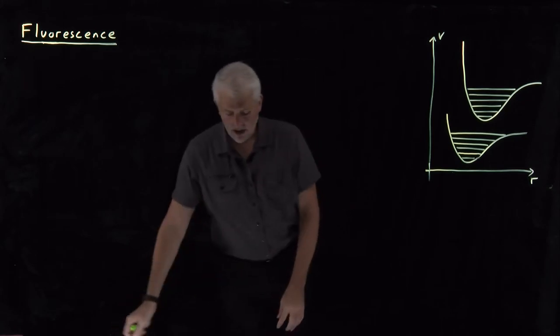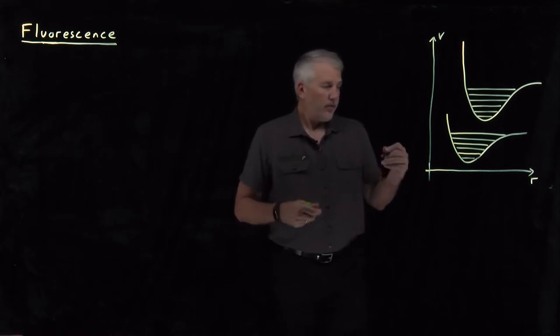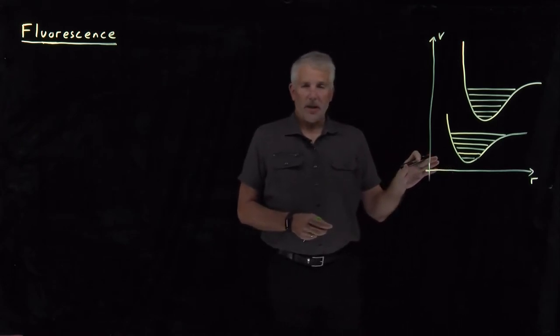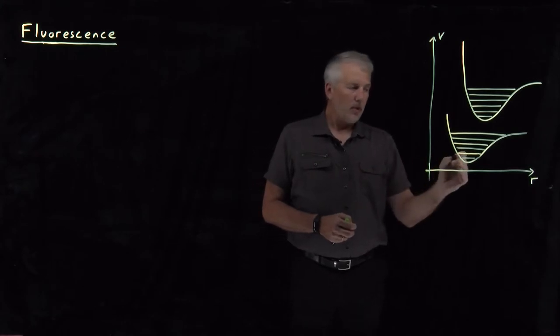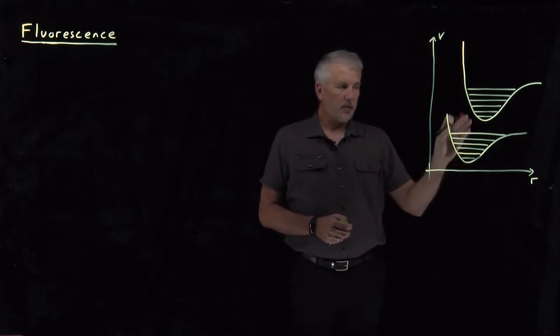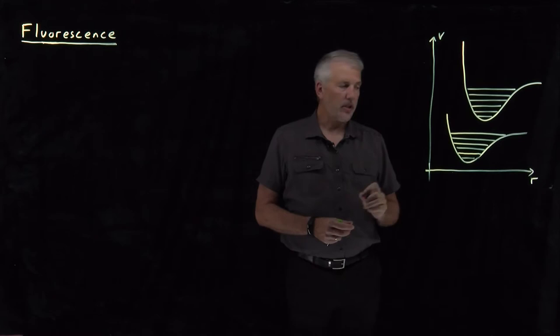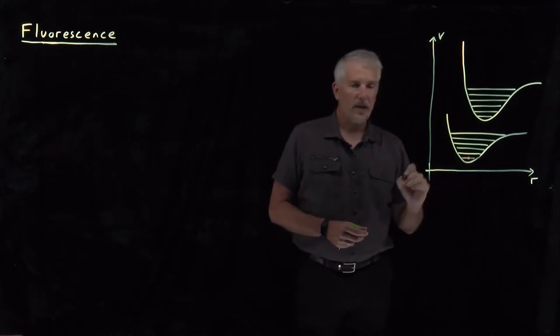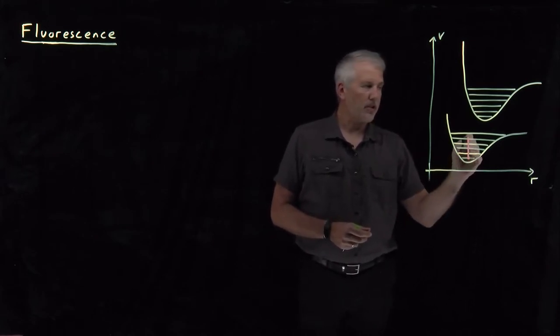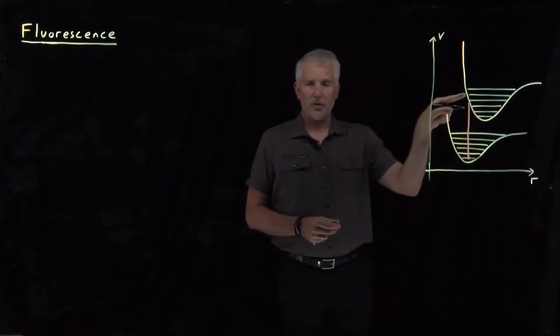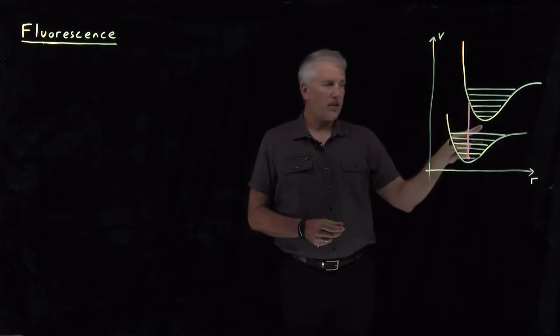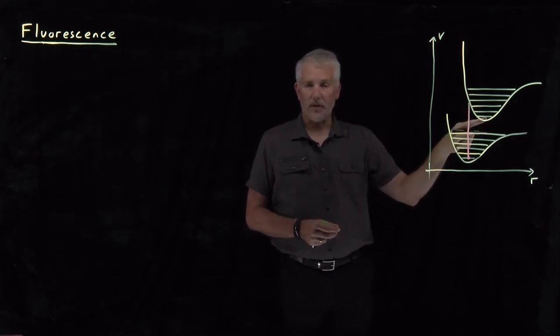So remember that we've learned that vibronic transitions between two different electronic states of a molecule, from one vibrational state to a vibrational state in the other electronic state, those have to be vertical transitions. So if we're starting out in the ground vibrational state of this ground electronic state, that vertical transition could land us in several different choices for which vibrational state, but it's likely not going to land us in the ground vibrational state.